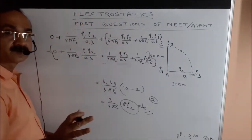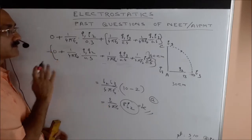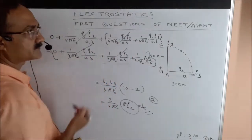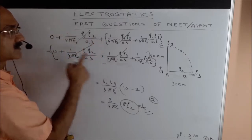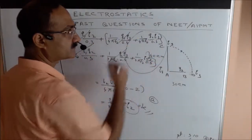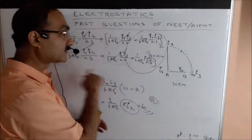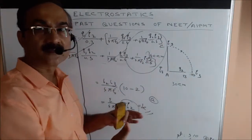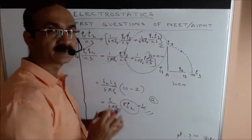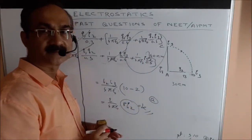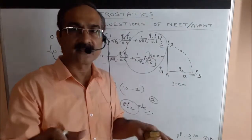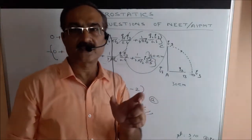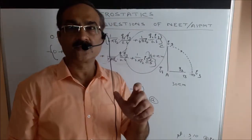Now you can see that the Q1·Q2 / 0.3 terms cancel, and the Q1·Q3 / 0.4 terms cancel, leaving only the Q3–Q2 interaction terms. What remains is exactly the equation I wrote straight away — the change in potential energy of Q3 between the final and initial configurations. Try to use your intelligence to solve problems smartly so it takes less time and fewer calculations.